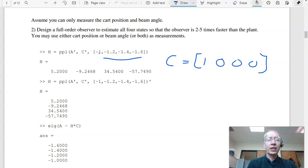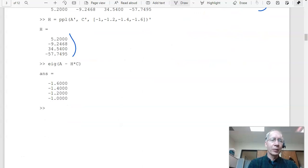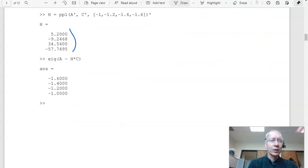With that, I can find my observer. Put the observer poles wherever you want. I chose minus 1, minus 1.2, 1.4, 1.6. About three times faster than the plant. Gives you H. That's actually H transpose. Here we go. That's H. And as a check, the eigenvalues of A minus HC are where I put them. Okay, so everything looks good.